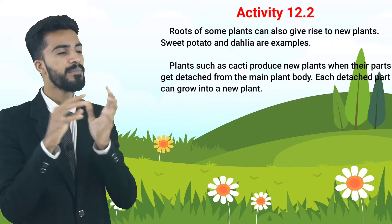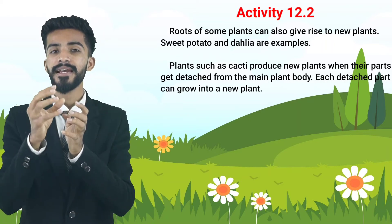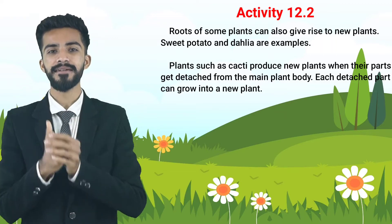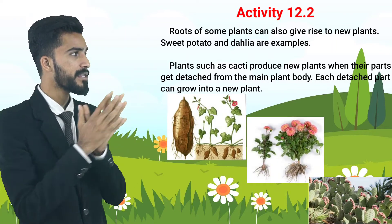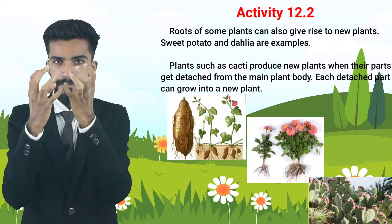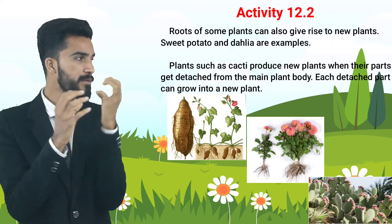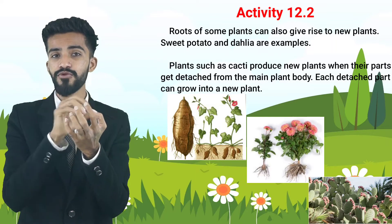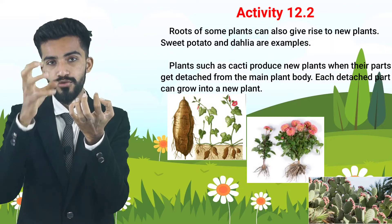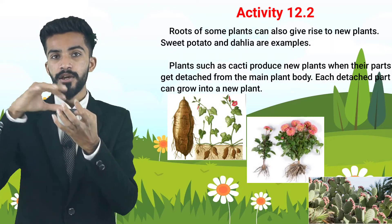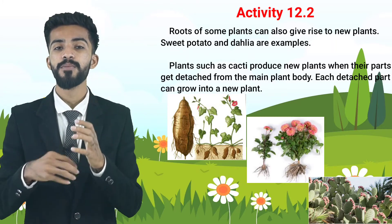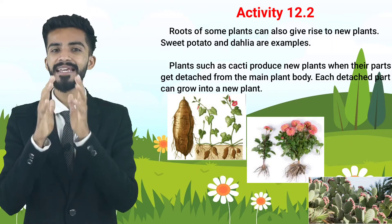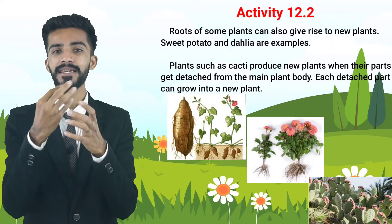Sweet potato and dahlia are examples where roots give rise to new plants. The roots of these plants are connected, and from those roots a new plant can grow. Dahlia is a flowering plant commonly found in India.